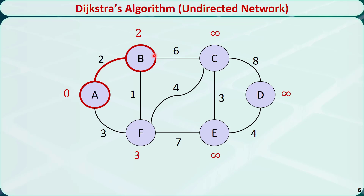Now let's check the neighbors of the visited nodes. Node B has two direct neighbors: node C and node F. The distance to node C is 2 plus 6 equals 8, which is smaller than positive infinity, so we replace it with 8. The distance to node F is 2 plus 1 equals 3, which is the same as the previous value, so we leave it at 3. Out of all the unvisited nodes, node F has the shortest distance. We have two options — move from B to F or from A to F — meaning the problem may have multiple shortest paths. I just randomly choose to move from B to F.